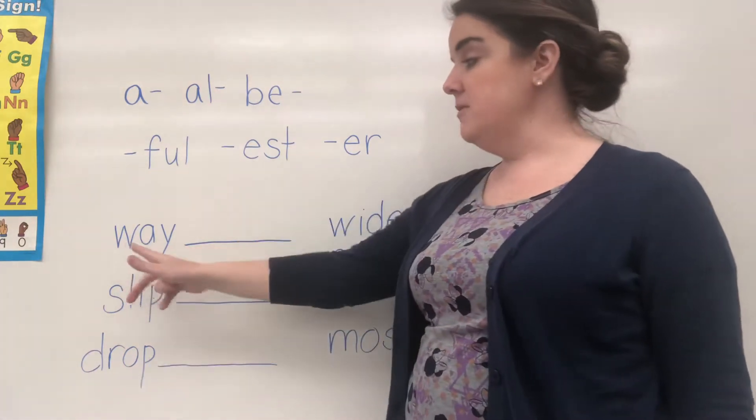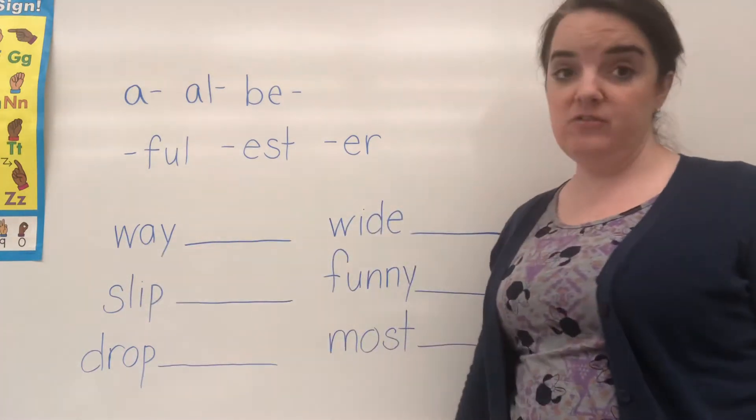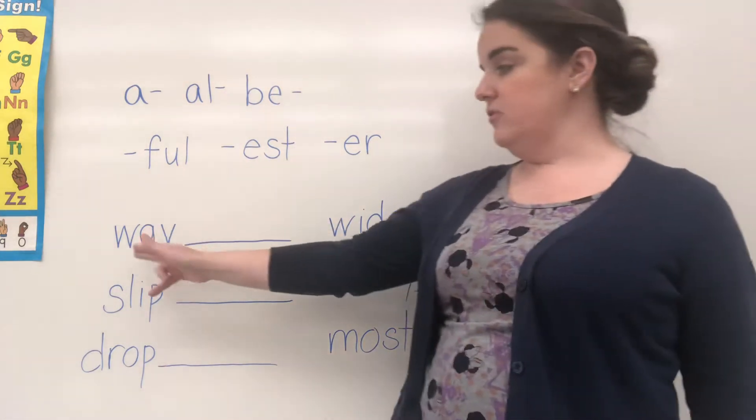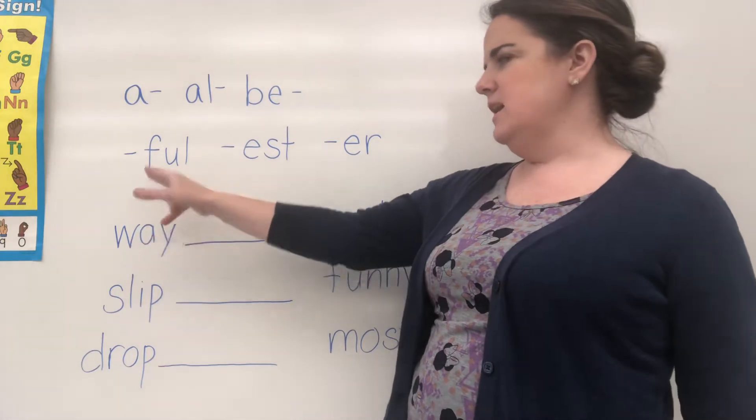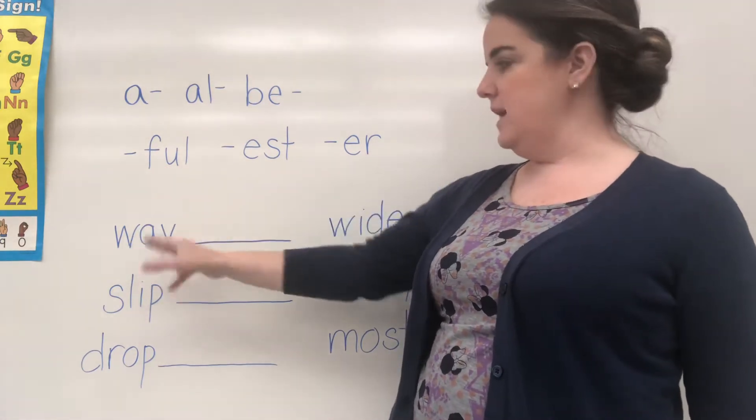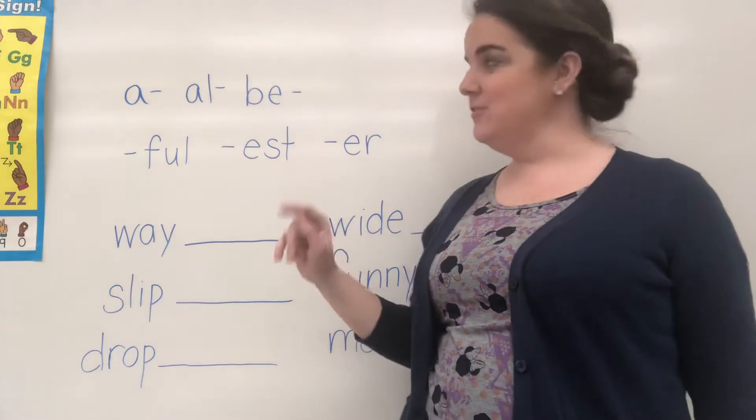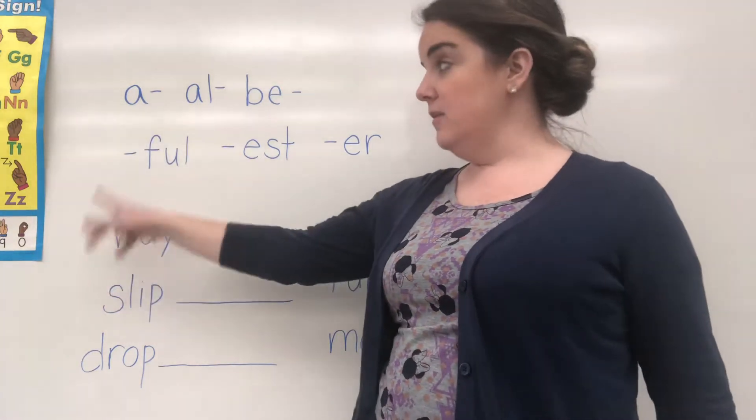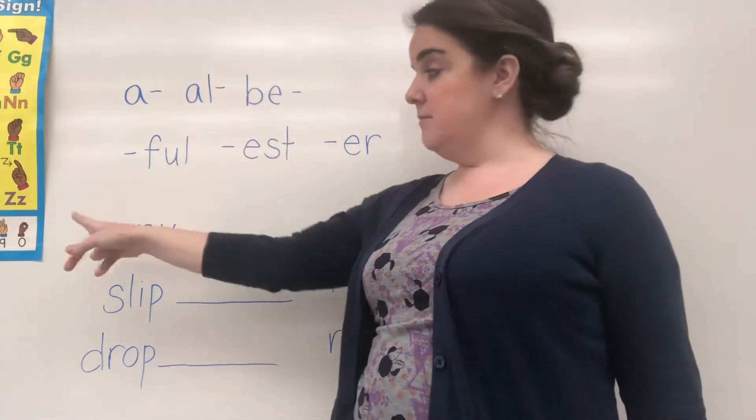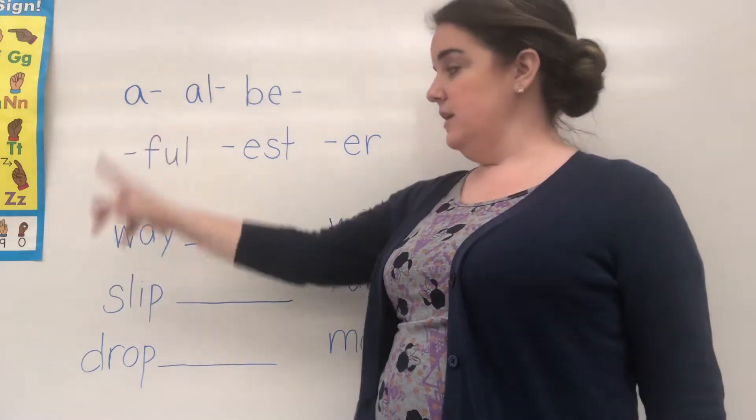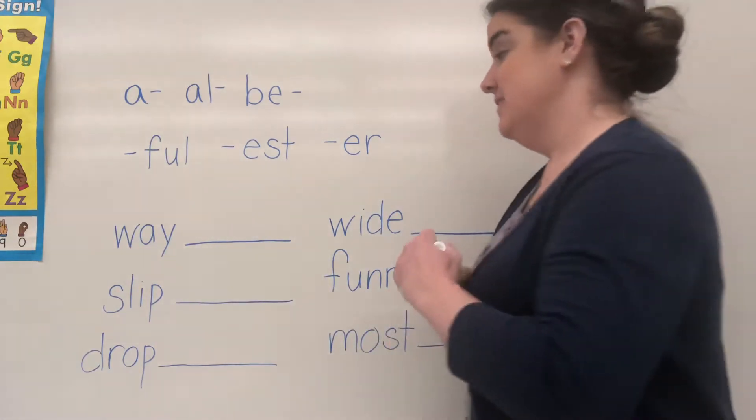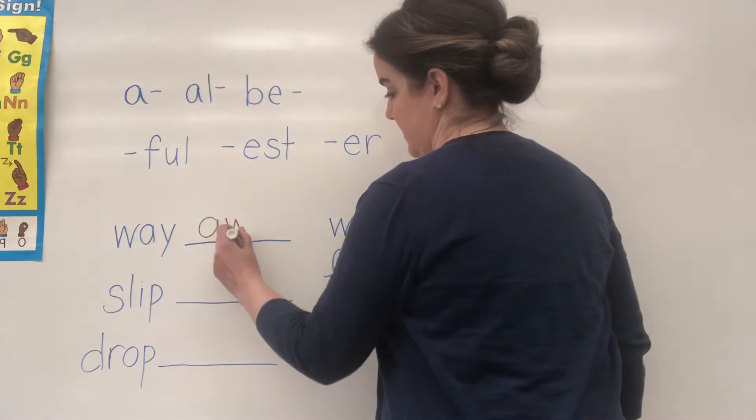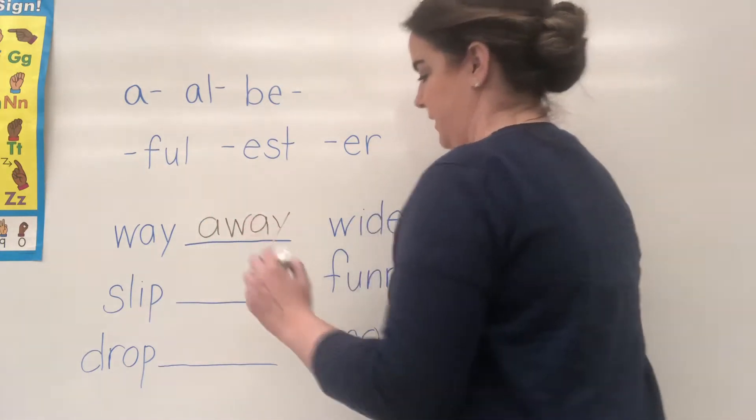So let's look at our first word. We have W-A-Y. All right. Can we add a suffix to way? Wayful, way-est, way-er? No, those don't sound right. What about adding a to way? These are prefixes, so these would come before. So a-way. Does that sound right? It does. So we're going to write our new word: away.